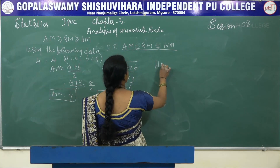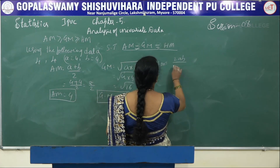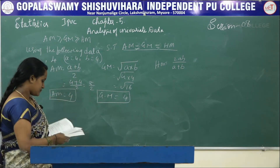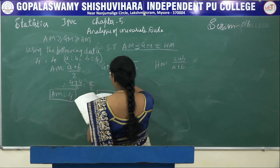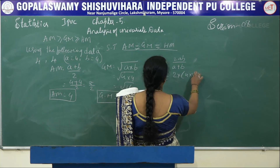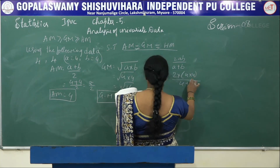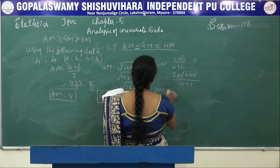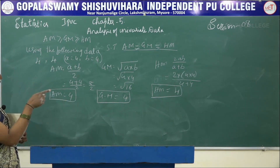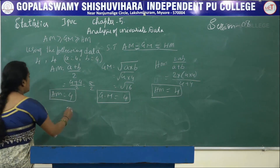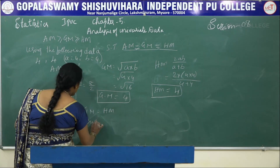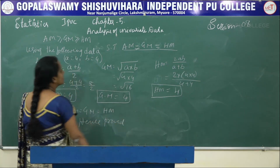To find HM, the formula is 2AB divided by (A + B). It is 2 × 4 × 4 divided by (4 + 4) = 32 divided by 8 = 4. Observing all three values: AM is equal to GM, which is equal to HM. Hence proved.